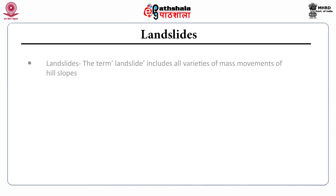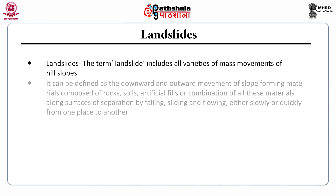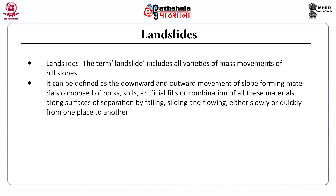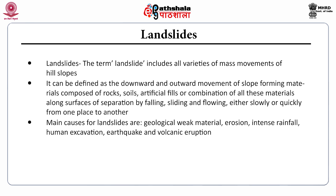Then, landslides. The term landslide includes all varieties of mass movements of hill slopes. It can be defined as the downward and outward movement of slope-forming materials composed of rocks, soils, artificial fills or combinations of these materials along surfaces of separation by falling, sliding and flowing, either slowly or quickly from one place to another. Main causes for landslides are geological weak material, erosion, intense rainfall, human excavation, earthquake and volcanic eruption.